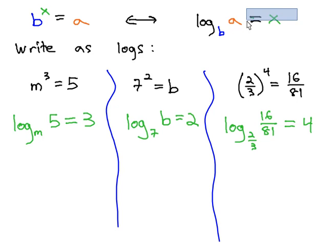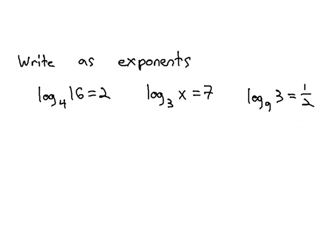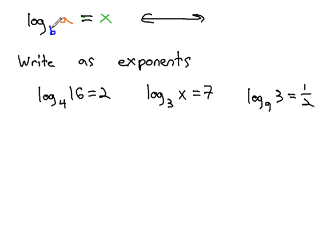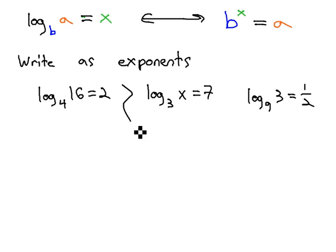We can also go in the opposite direction if we first start with the log information. If I first give you the log, we should be able to convert it into an exponent, because we know this little tiny subscript is the base of the problem. It always equals the exponent on the problem, and then we can make it equal to whatever's inside the logarithm. Two ways to write the same expression.